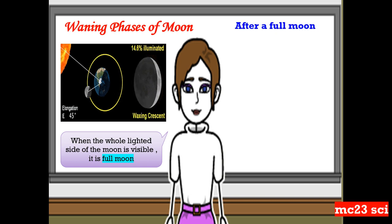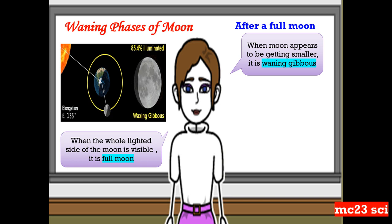So after the full moon, when the moon appears to be getting smaller, it is what we call the waning gibbous.